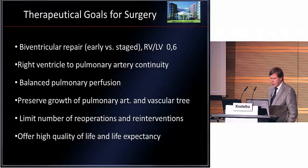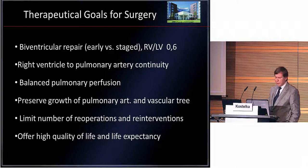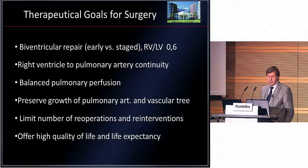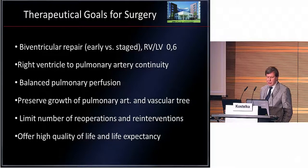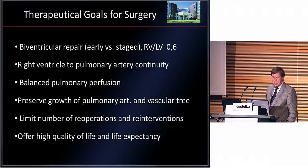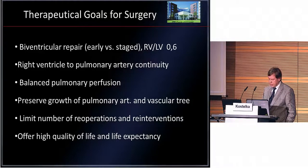What is the goal of surgical treatment? It is biventricular repair because we have good developed two ventricles, and an RV/PA ratio of 0.6 — meaning low right ventricle pressure. We aim for right ventricle-to-pulmonary artery continuity, balanced pulmonary perfusion, preserved growth of the pulmonary artery and vascular tree, and a limited number of reoperations and reinterventions, offering with this protocol high quality of life and life expectancy.